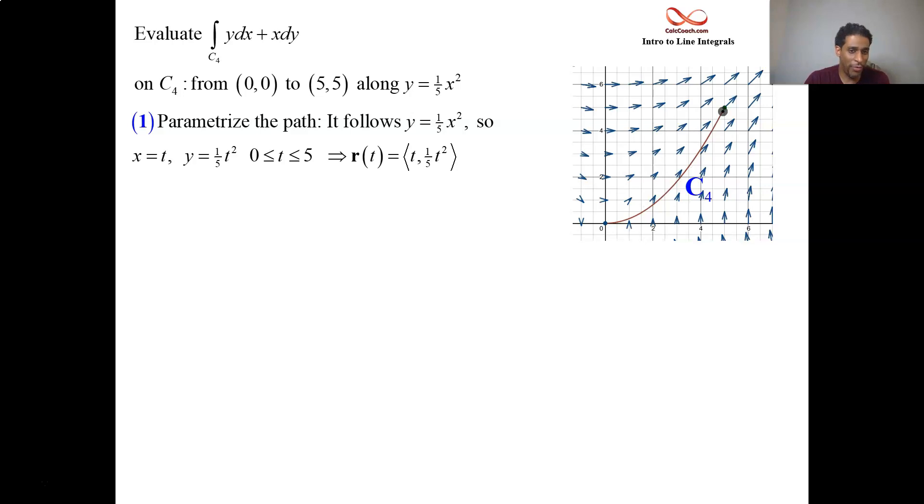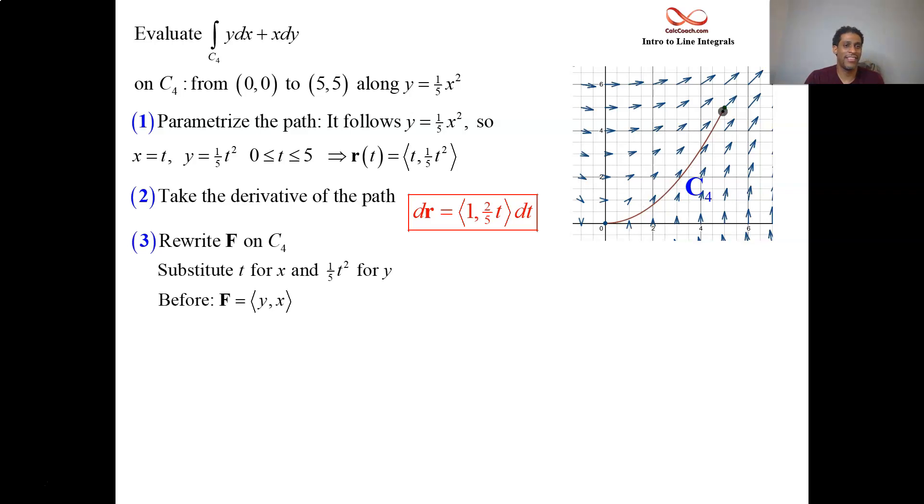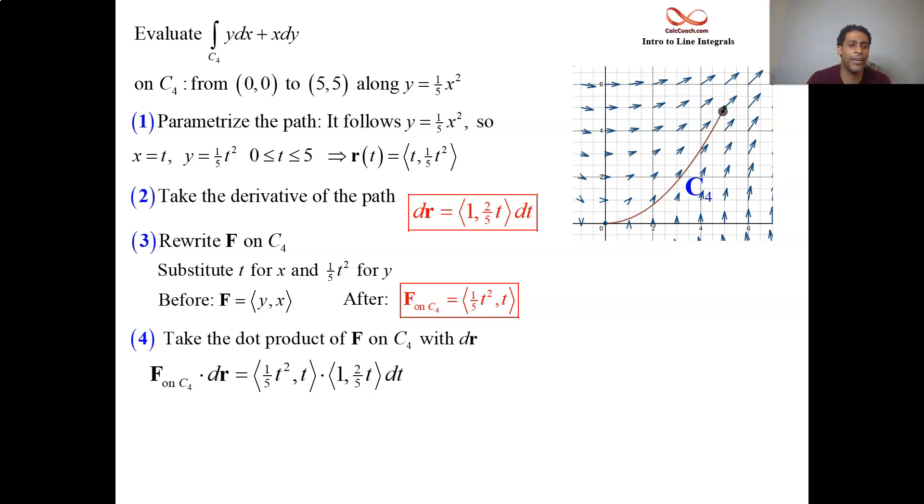So t and one fifth of t squared. Step two, take the derivative: 1 and two fifths of t. That's half of your dot product. Remember to put the dt on the end. Go back to the path. Replace the y's with one fifth t squared. Replace the x's with t's. Dot product. In step four, you'll get one fifth t squared and two fifths t squared. Grand total of three fifths t squared. That's what you integrate from 0 to 5. We end up with the t cubed over three with that three cancel with the three in the numerator there. And you're putting the five in. You're getting 25 again.